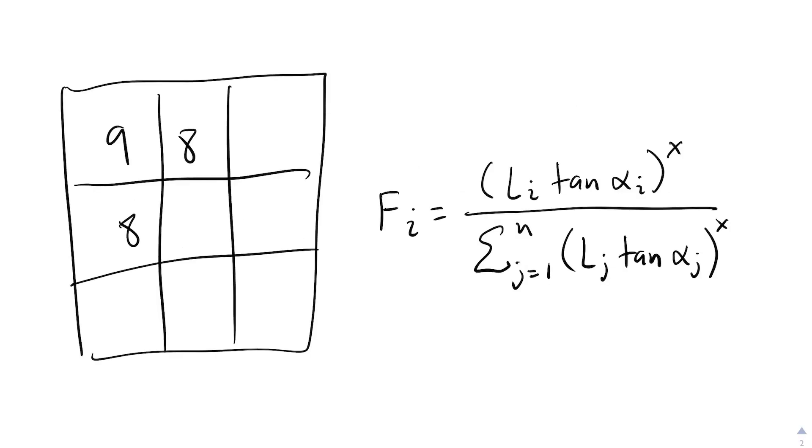So going back to the previous example, the flows to the cell's neighbors with elevations of 7, 8, and 9 are all 0. Then, to compute the flow to the neighbors with an elevation of 6, we only have to look at the top part of the equation and then we can normalize all the values at the end. In the equation, Li is 1 half for the adjacent cells as we previously mentioned, and the tangent of alpha i is the slope, and thus 1. So the flow towards the two cells is 1 half before normalization.